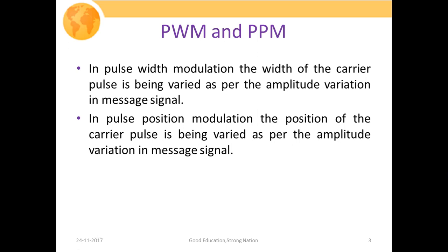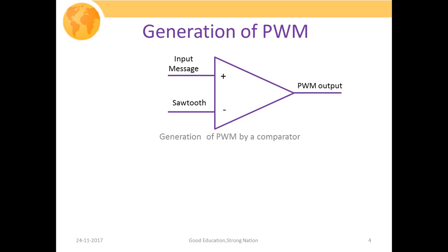In pulse position modulation, the position of the carrier pulse is varied as per the amplitude variation of the message signal. This particular figure shows how we will generate pulse width modulation with the help of a comparator. In the comparator, at the non-inverting terminal we apply our message signal, and at the inverting terminal we apply a sawtooth waveform which acts as the carrier pulse.